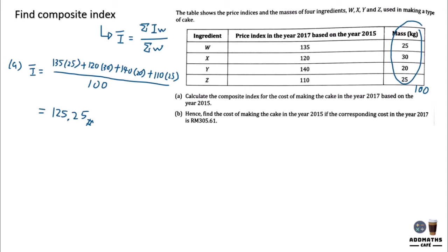Hence, hence means you need to use the answer from the first question. Find the cost of making the cake in the year 2015 if the corresponding cost in 2017 is 305.61. So you know that P17 divided by P15 times 100 will give you the composite index over here, which is 125.25. So now we are solving b.